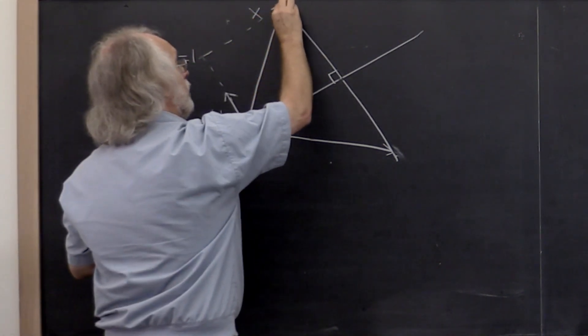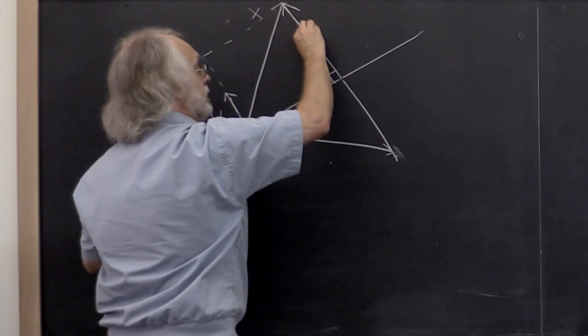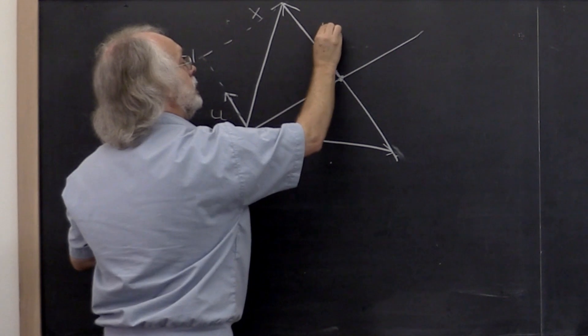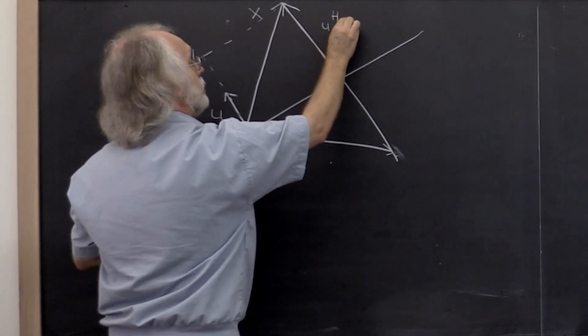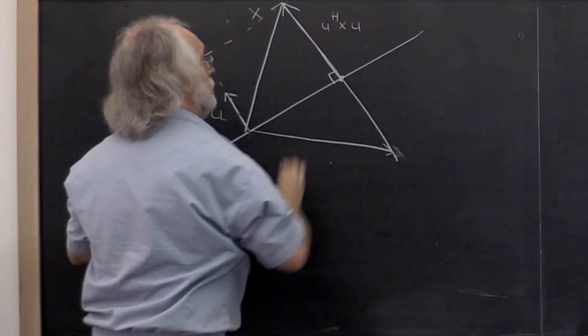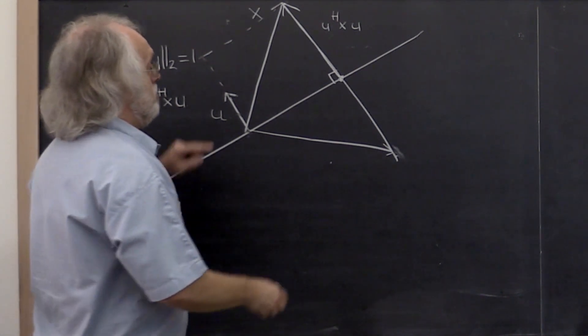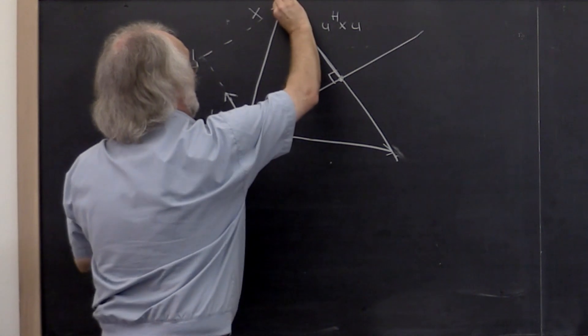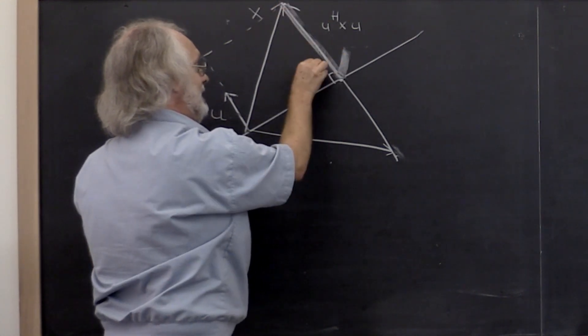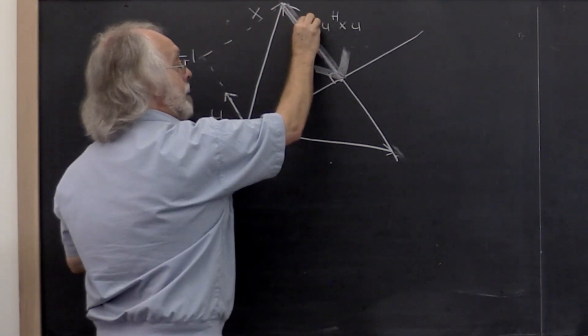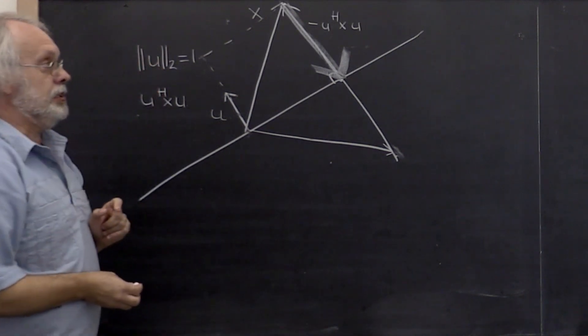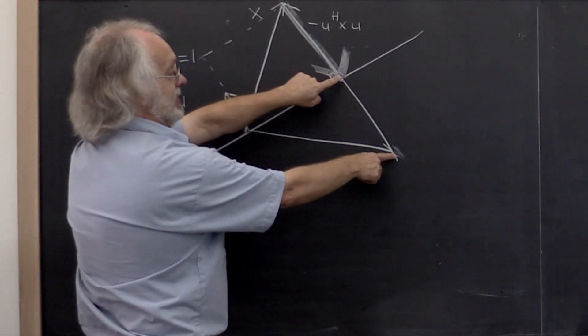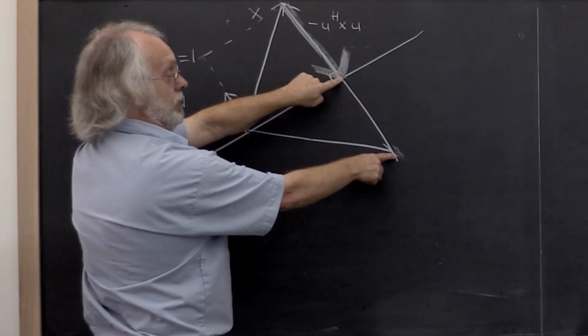And therefore, this right here, from this point right here, is also u dot product with x times u. And therefore, this vector but pointed in the opposite direction is the vector minus dot product of u with x times u. And then this points in exactly the same direction and has the same length.